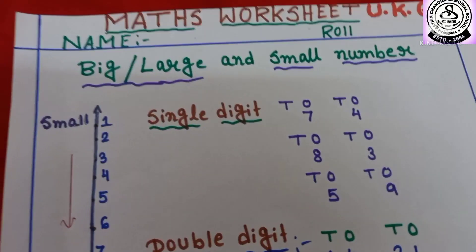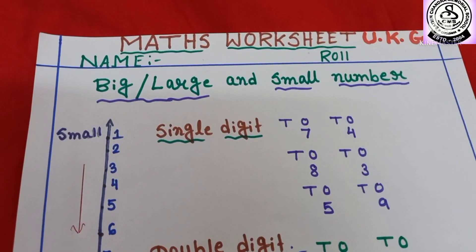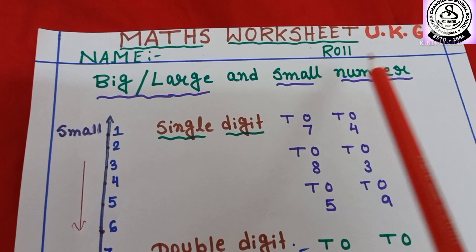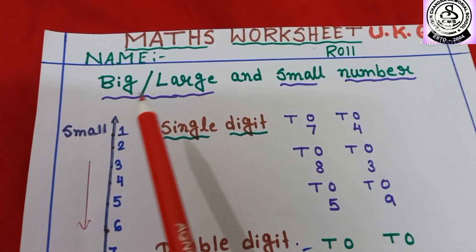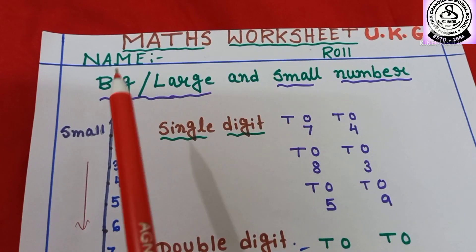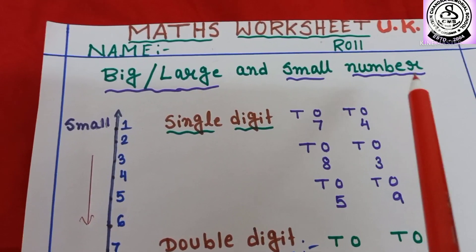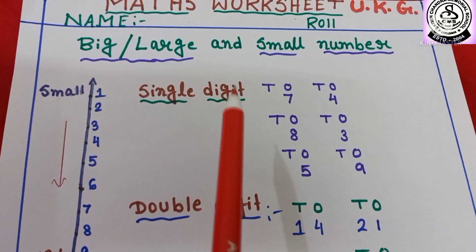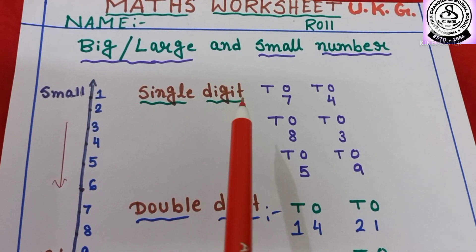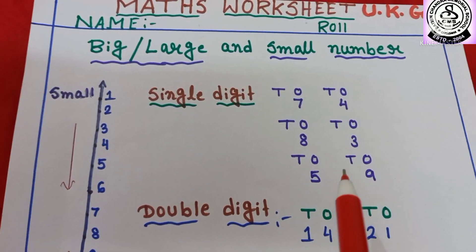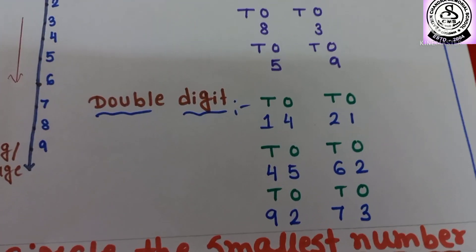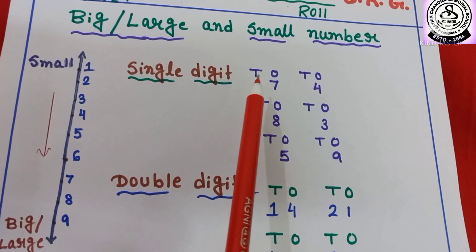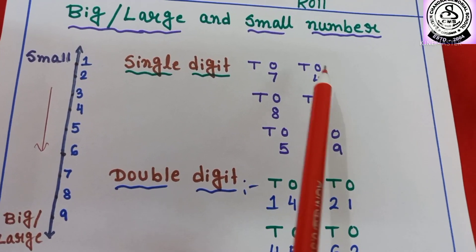I am here with my maths worksheet. First, what you have to do? You have to write your name and roll number. And for the heading I have written big or large and small number. Here you can see I have written single digit — S-I-N-G-L-E — single digit means one digit number. And here I have written two digit numbers, mean double digit. First I have written ones and tens here also.